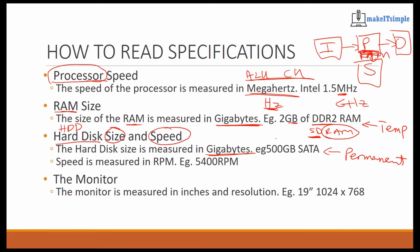Permanent storage means you need a lot more space. Think of temporary storage — RAM — like your brain, and think of the hard drive or permanent storage like a library. The library has a lot of books stored on big shelves, whereas your brain only holds things in virtual space. So the hard drive is measured in gigabytes and has three things: a size, a type, and a speed.